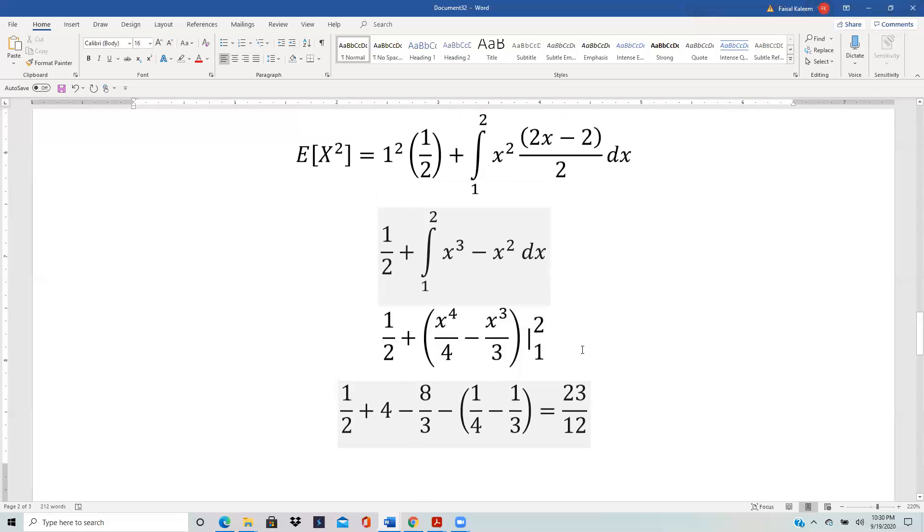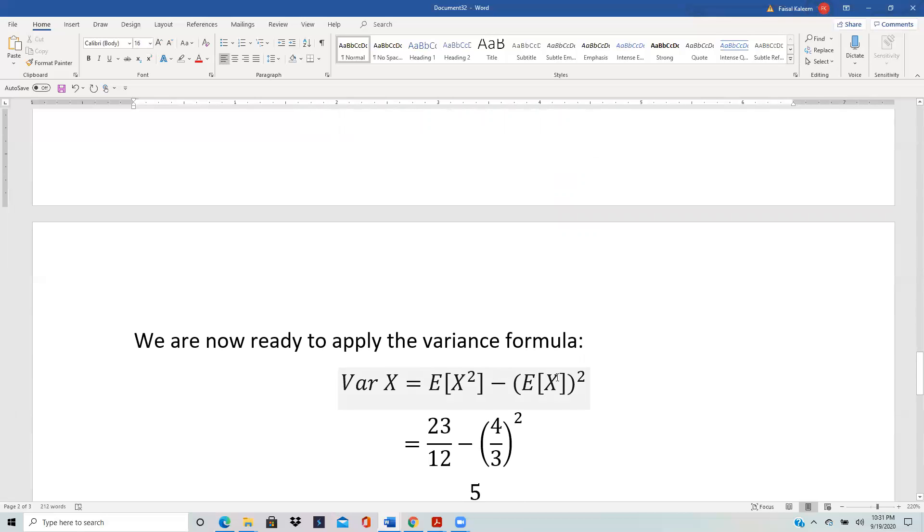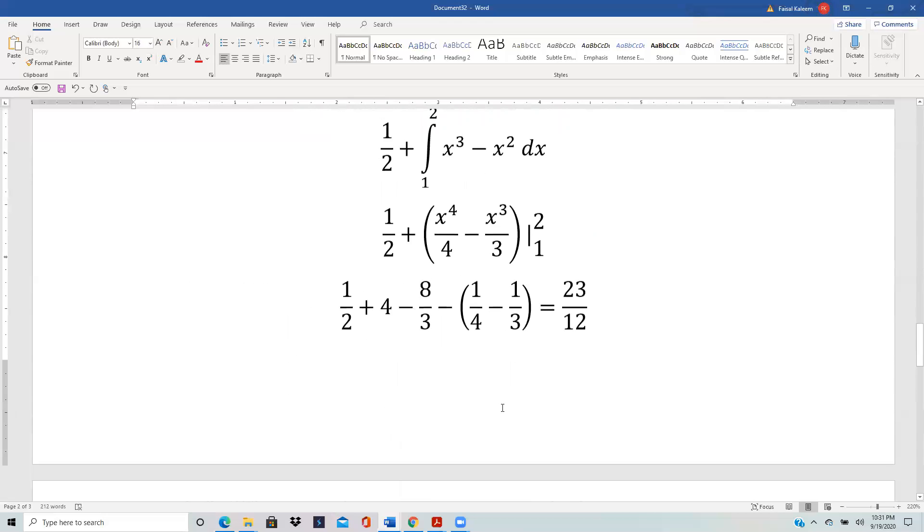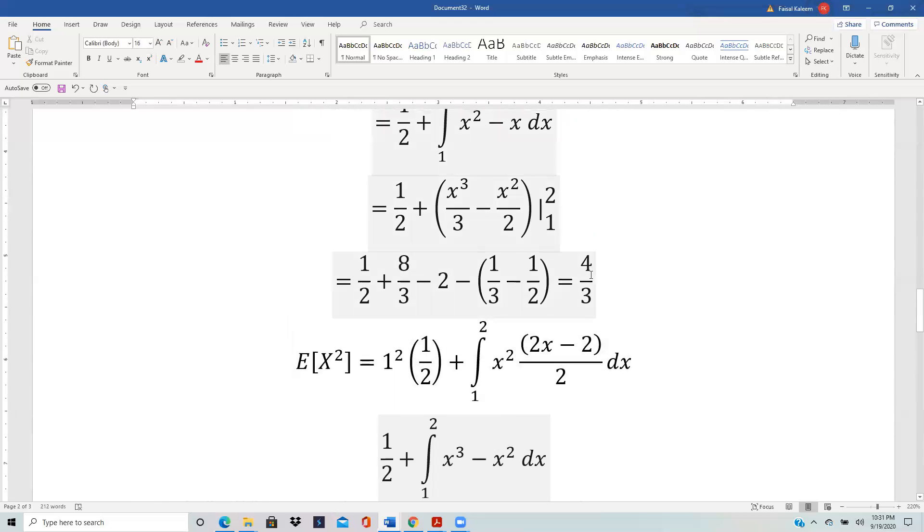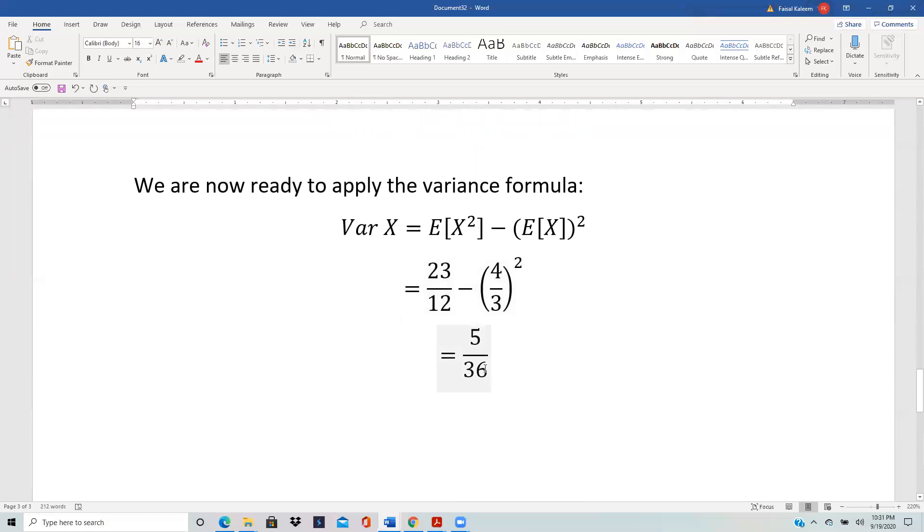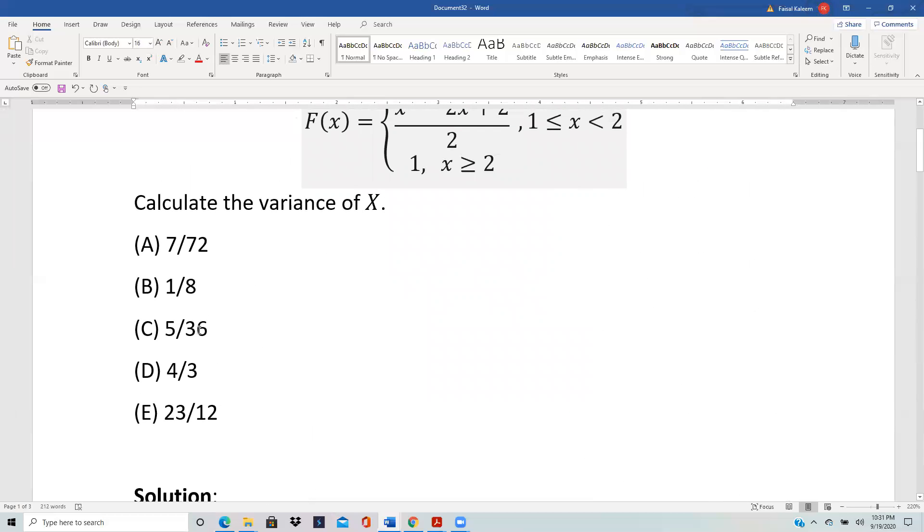Now we are ready to apply the variance formula which is E[X²] - (E[X])². So E[X²] was 23/12 and E[X] was 4/3, so we end up with 5/36 which is choice C.